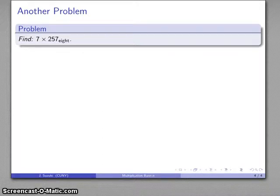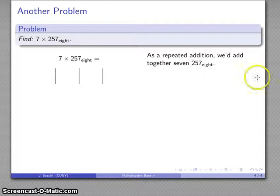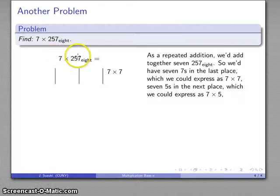Let's try that out. How about 7 × 257 base 8? As a repeated addition, I add together 7 of 257 base 8. In this first column, I get seven 7s. If I know something about multiplication, I can figure out what that is. In the next column, I get seven 5s. I can at least write that down, even if I don't know what that is. And then finally, I have seven 2s in that third column.